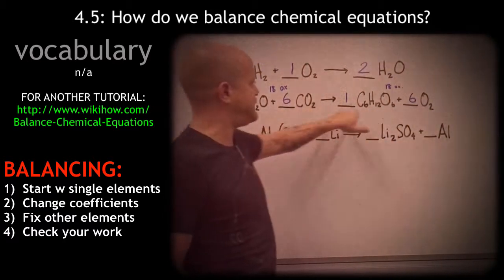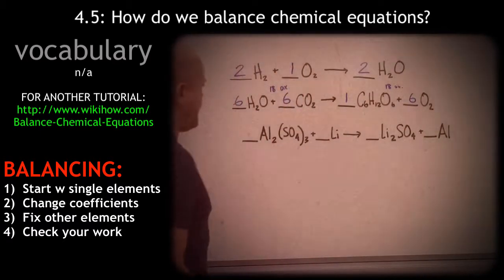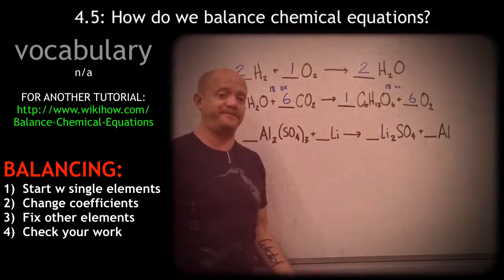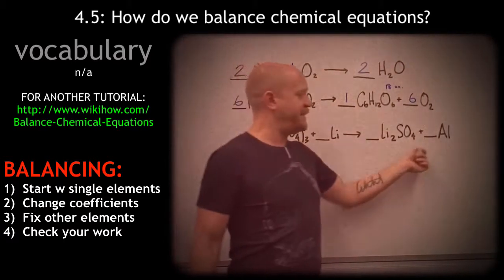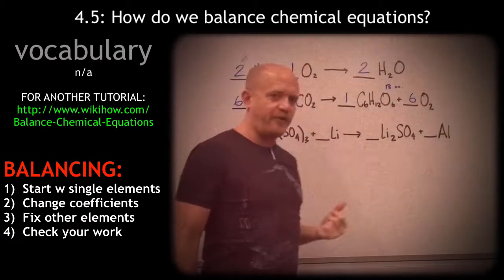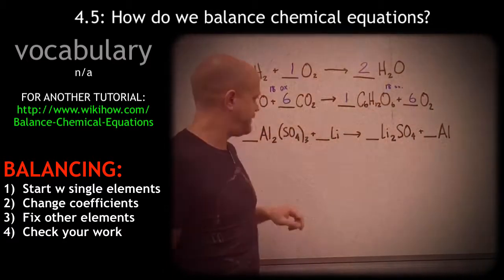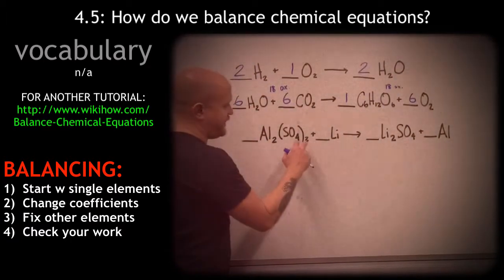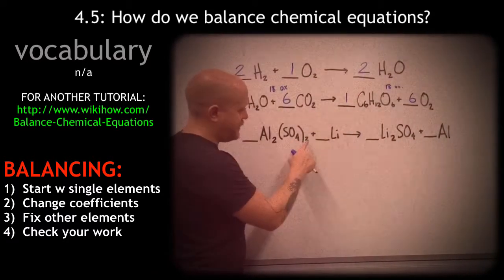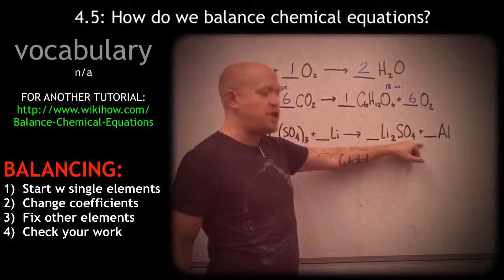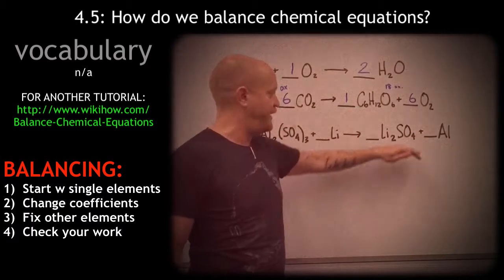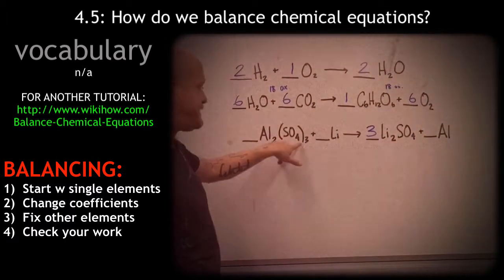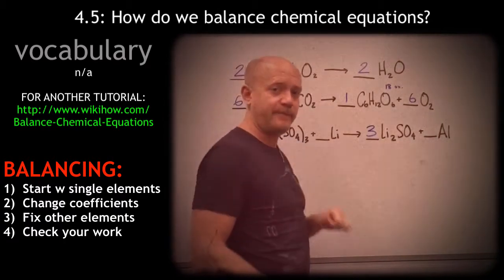When we have something containing a polyatomic ion it might look complicated, but it's actually quite simple. Notice we have SO₄ here and SO₄ here — we're calling it sulfate, not sulfur and oxygen separately. How many sulfates on the left? There's a subscript of three, so we have three sulfates. There's no subscript behind the sulfate on the right, so we have one sulfate. We go ahead and write a three in front of that compound — now we have three sulfates on each side.